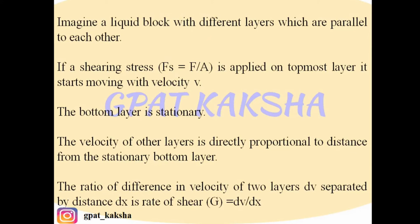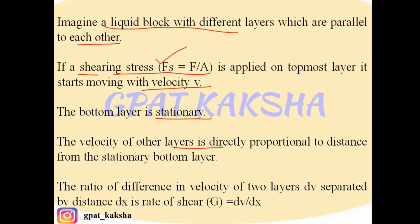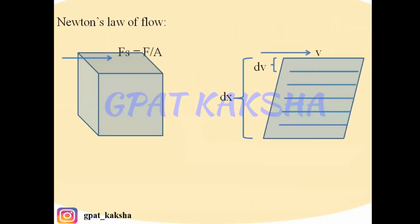Imagine a liquid block with different layers which are parallel to each other. If a shearing stress Fs, equal to F divided by A, is applied on the topmost layer, it starts moving with velocity V. The bottom layer is stationary. The velocity of other layers is directly proportional to their distance from the stationary bottom layer. The ratio of the difference in velocity of two layers, dV, separated by distance dX, is the rate of shear.